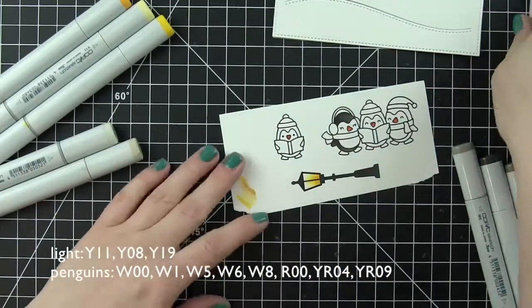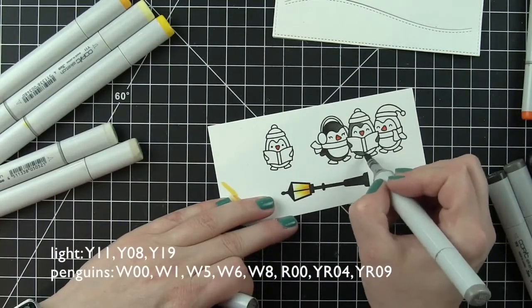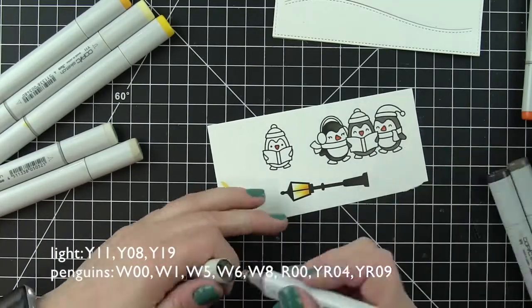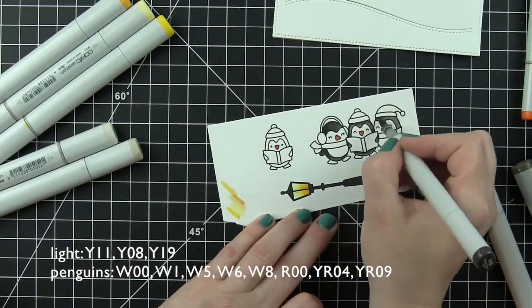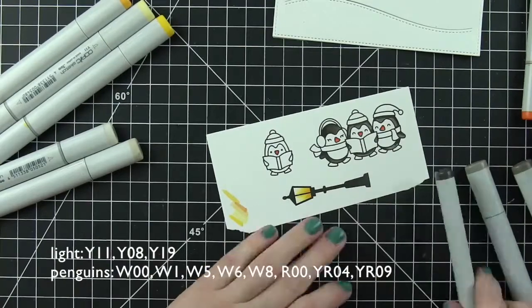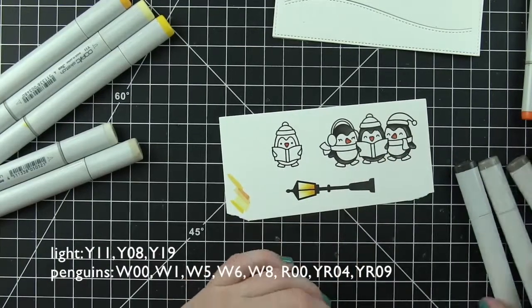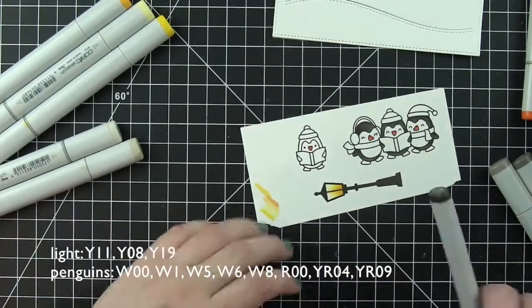Along the bottom of the screen, I have listed the Copic colors I'm using for different elements of the design. I stamped the images with Lawn Fawn Jet Black ink, which works fantastic for Copic coloring and won't bleed. I started with the light. I wanted it to appear that the light is glowing from the bottom up.